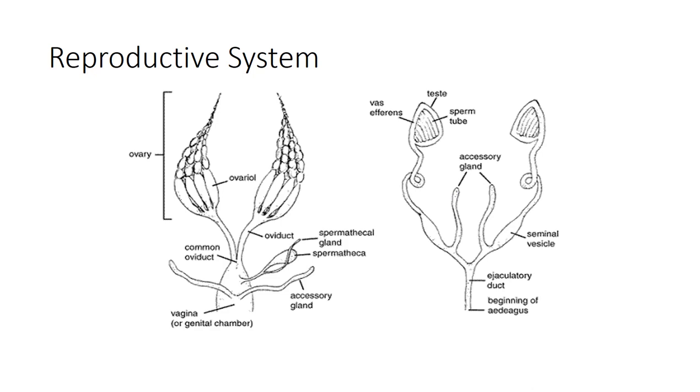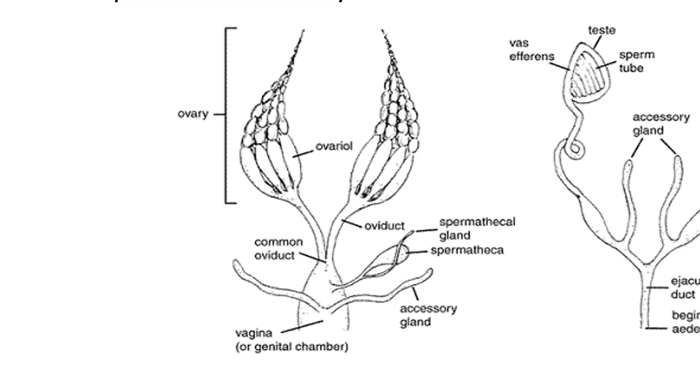Variation among insect reproductive systems is great. Closely related species are often isolated from one another via small variations in the morphology of reproductive organs that prohibit interspecies mating. However, a generalized system can be constructed that closely represents all sexually reproducing insects. Female insects are able to make eggs, receive and store sperm, manipulate sperm from different males, and lay eggs.